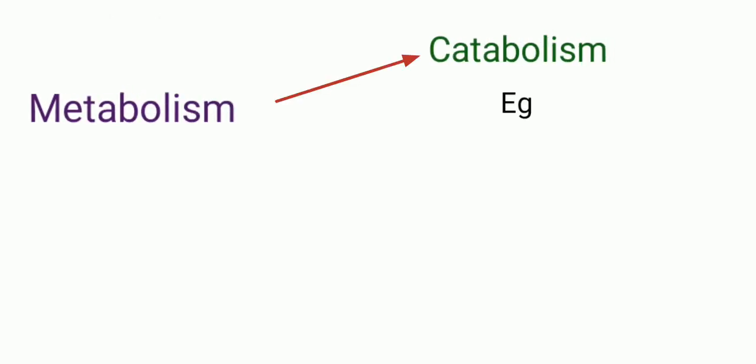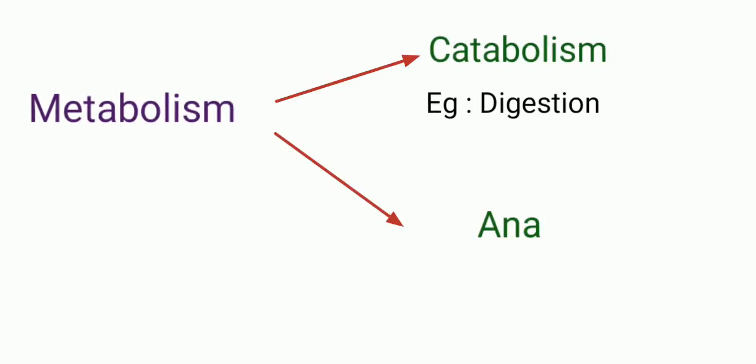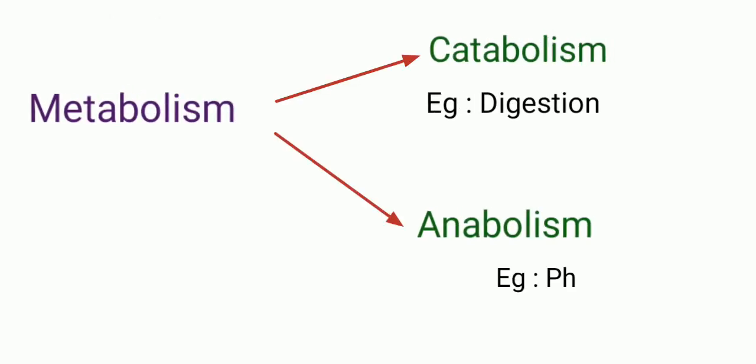Metabolism includes catabolism and anabolism. Catabolism is the breaking down of large molecules, for example digestion. Anabolism is synthesizing molecules from small molecules, for example photosynthesis.